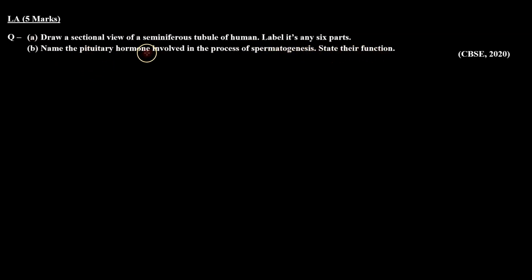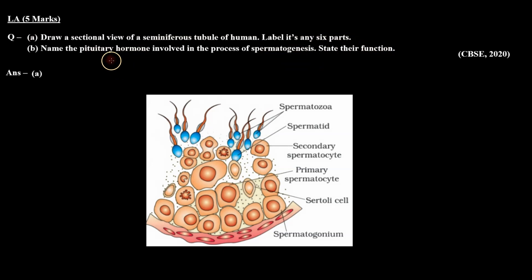Let's check the answer. For Part A, here is the diagram of the sectional view of a seminiferous tubule of human. The labeled parts are: spermatogonium, sertoli cells, primary spermatocyte, secondary spermatocyte, spermatid, and spermatozoa.